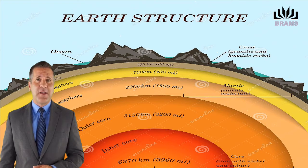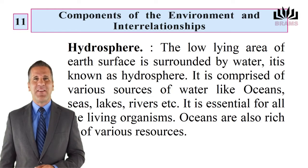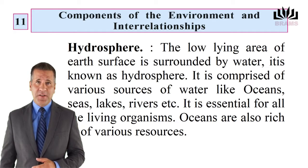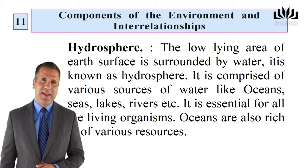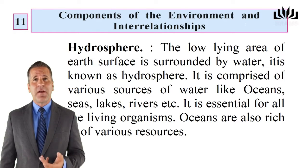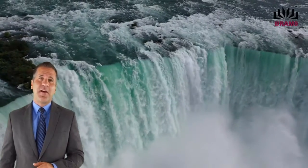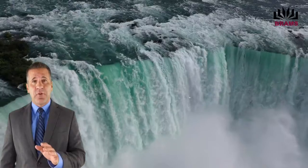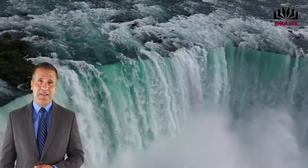Hydrosphere: The low-lying area of the earth's surface is surrounded by water — it is known as hydrosphere. It is comprised of various sources of water like oceans, seas, lakes, rivers etc. It is essential for all living organisms, and oceans are also rich in various resources. जलावरण: पृथ्वी की सतह का निचला हिस्सा पानी से घिरा है जिसे जलावरण कहते हैं। यह पानी के विभिन्न स्रोतों जैसे महासागरों, समुद्रों, नदियों, झीलों आदि से बना है। पानी सजीव सृष्टि के लिए अनिवार्य है तथा महासागर भी संसाधनों के भंडार हैं।